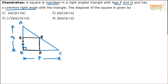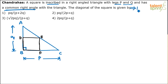BDEF is a square. One important point is that the square has a common right angle with the triangle — that common right angle is angle B. The diagonal of the square we need to measure is BE. So we need to find BE.